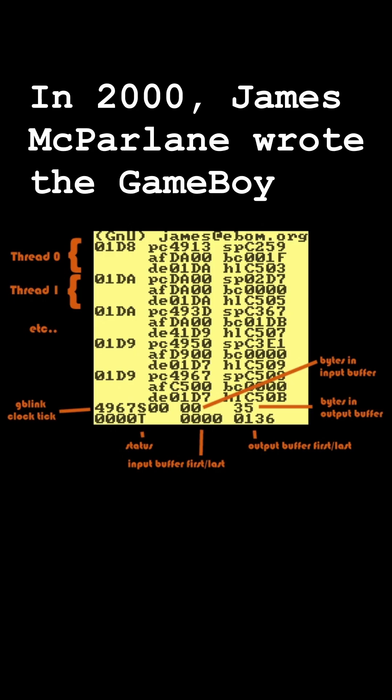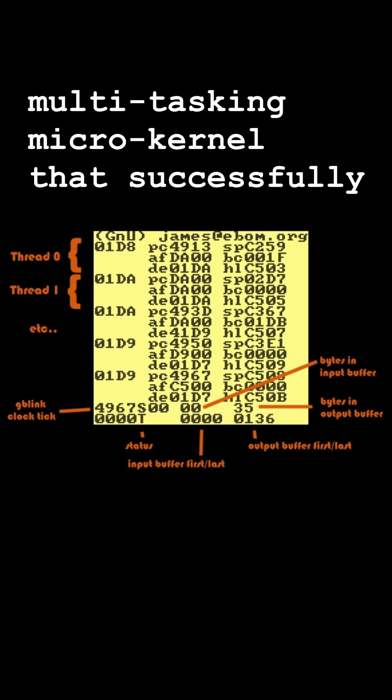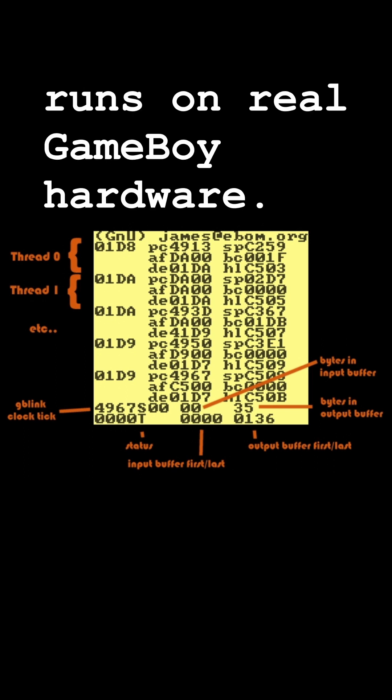In 2000, James McPylin wrote the Game Boy Thread Library, or GBThreadlib, a pre-emptive, multi-tasking micro-kernel that successfully runs on real Game Boy hardware.